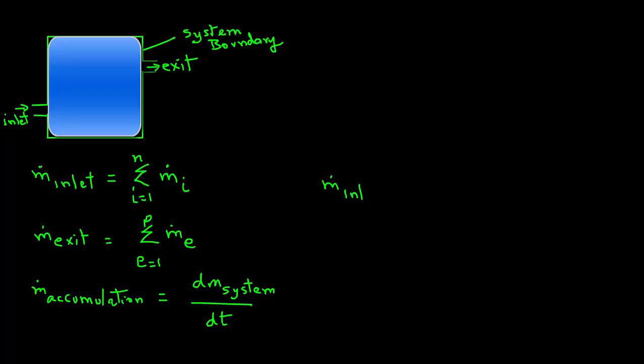Now, if we substitute these into our word equation, we get M dot inlet minus M dot exit equals dM system over dT. Now, this equation is what we will then use in our analysis of various food processing systems.